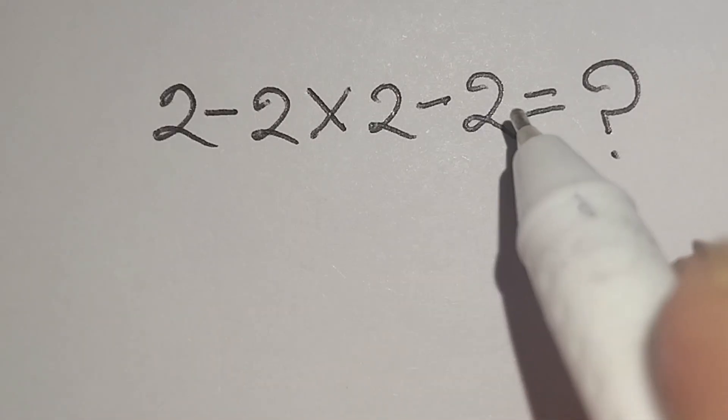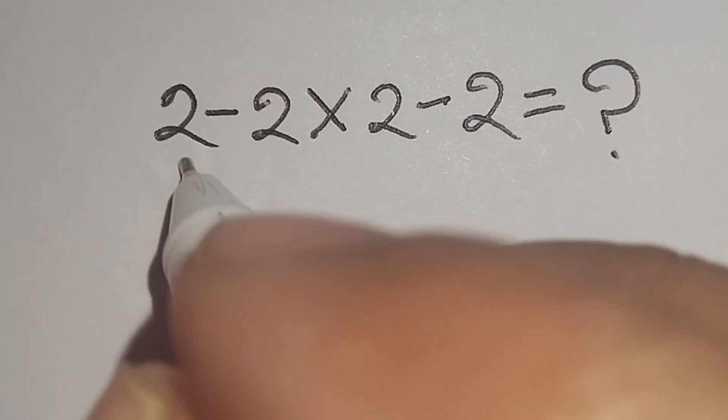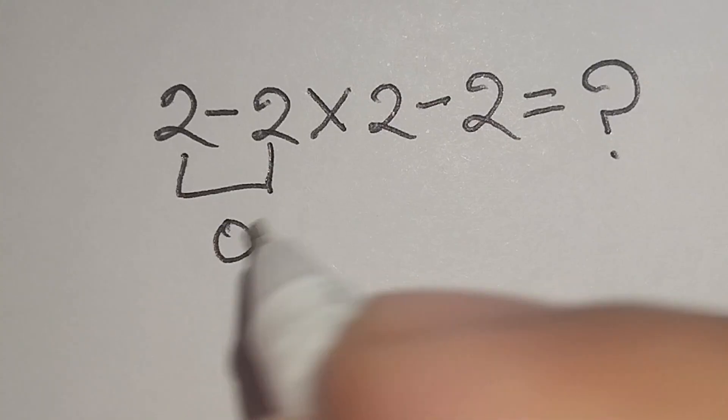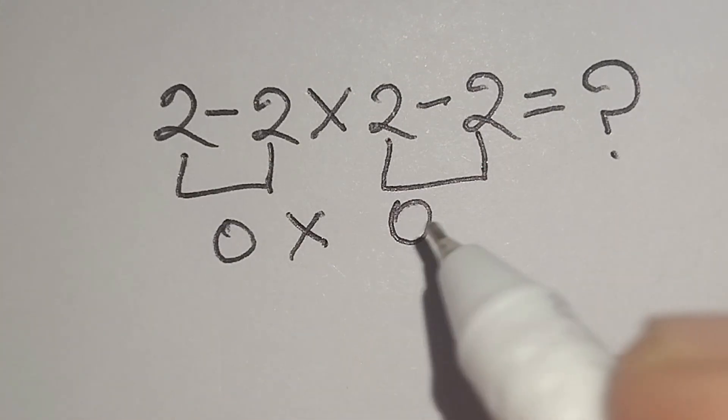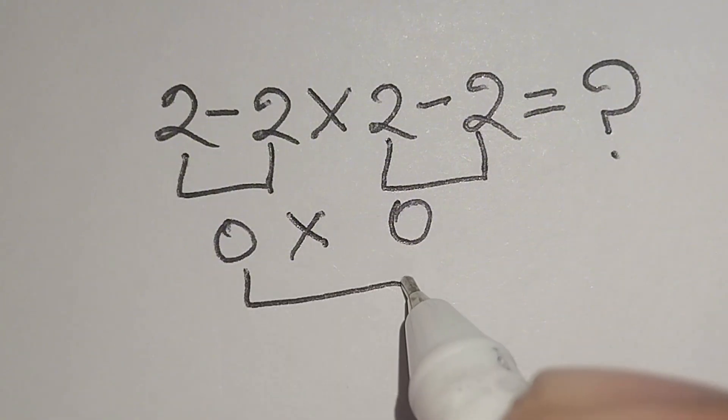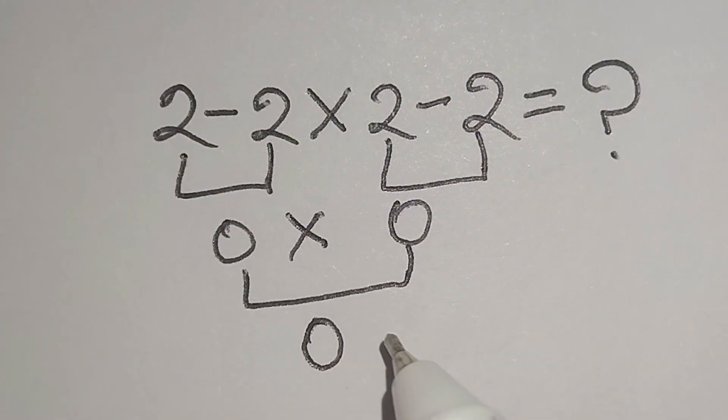2 minus 2 multiply 2 minus 2 equals what? Here, this 2 minus 2 gives us 0, this multiply 2 minus 2 gives us 0, this 0 multiply 0 gives us 0. But it is not correct.